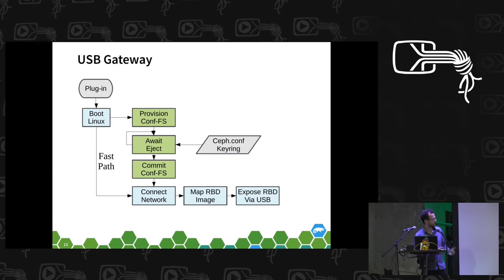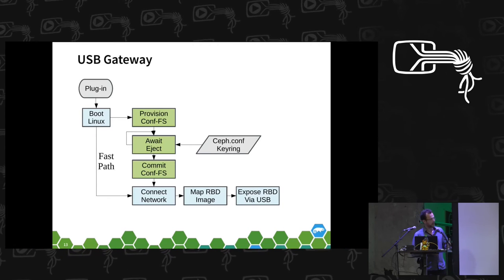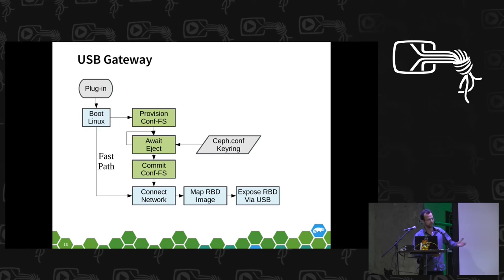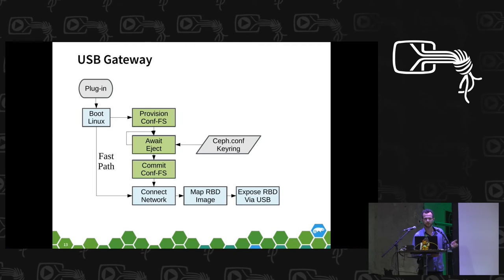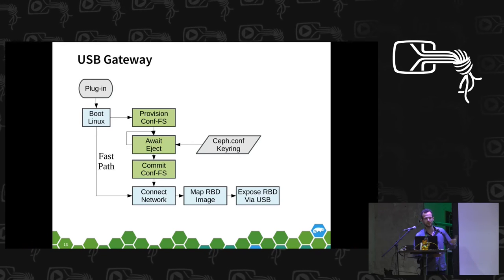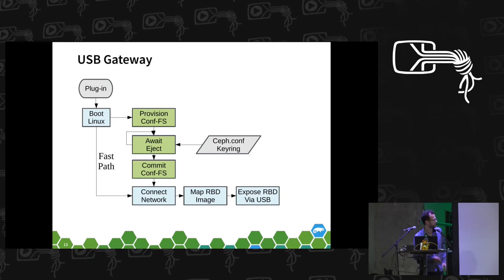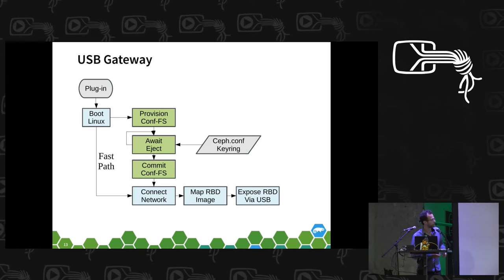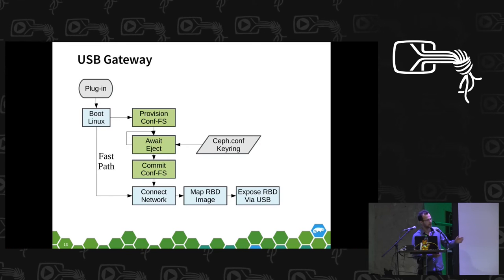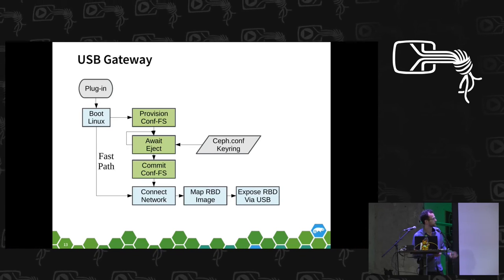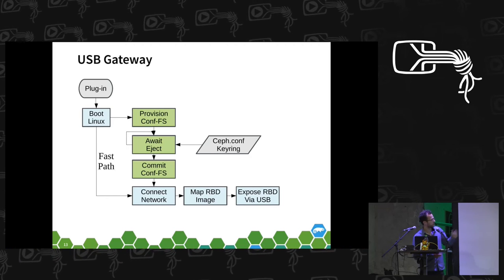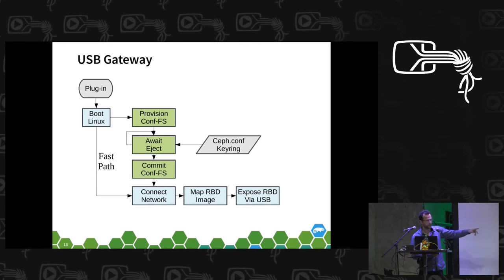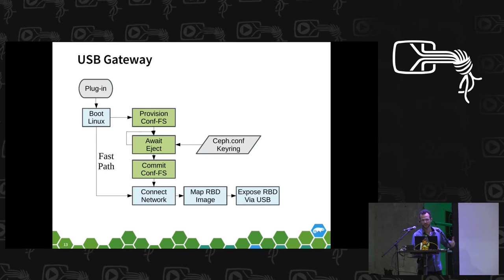Now on to how the board's boot sequence works. You plug the board into your machine, then point it at your Ceph cluster — that involves getting the Ceph configuration and keyring for authentication, and telling it which image should be exposed as a USB storage device. This is handled via what I call a configuration filesystem: I provision a RAM disk, format it with FAT so it works on Windows or Linux, and the user copies the configuration files onto the board. Once ejected, we intercept the eject event, then go ahead and map the Rados block device image and expose it via USB.